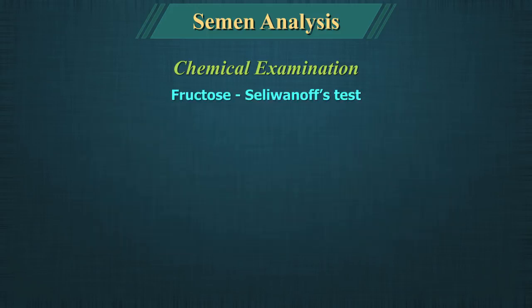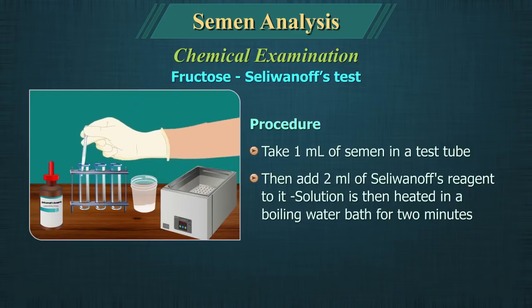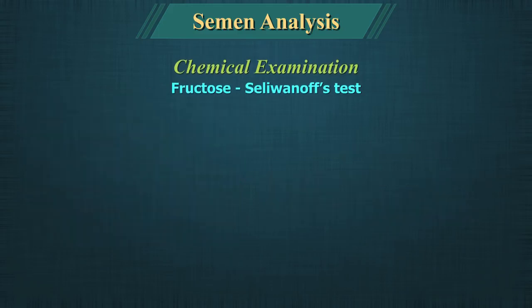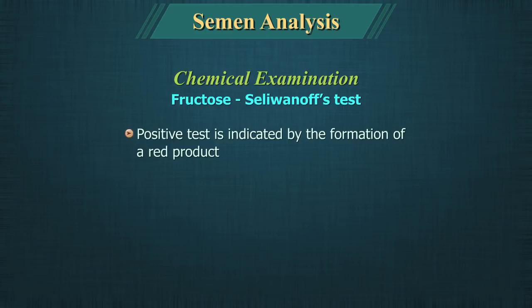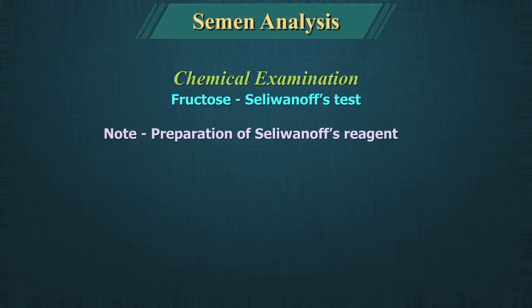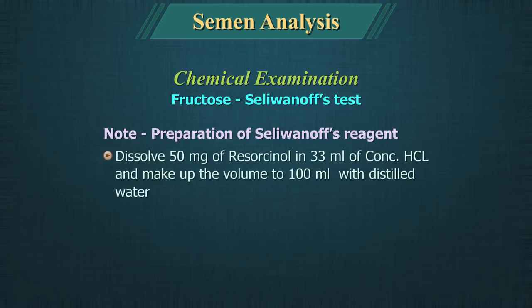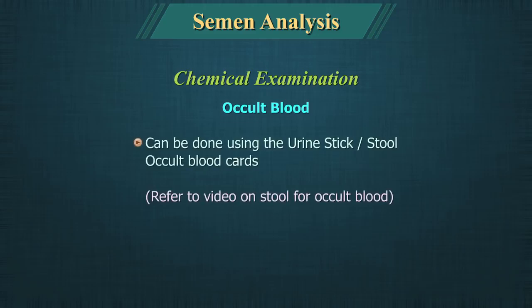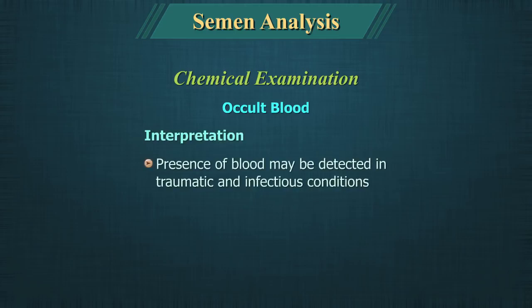Fructose using Selvinov's test — Procedure: Take 1 ml of semen in a test tube, add 2 ml of Selvinov's reagent, and heat in a boiling water bath for 2 minutes. A positive test is indicated by formation of a red product. To prepare Selvinov's reagent: dissolve 50 mg of resorcinol in 33 ml of concentrated hydrochloric acid and make up the volume to 100 ml with distilled water. Fructose in semen reflects the secretory function of the seminal vesicle. Occult blood can be tested using a urine stick or stool occult blood cards; its presence may indicate traumatic or infectious conditions.